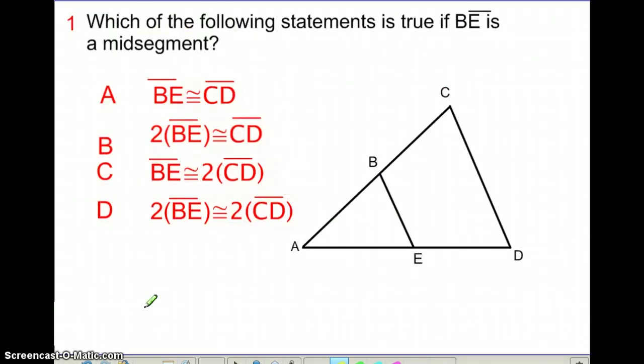Using the midsegment theorem, think about this question. Based on the drawing here, BE is a midsegment of triangle ACD. Which of the following statements is going to be true in that case? The best recommendation is to go through each of these four and decide what the characteristics are. Nothing is being said about angles, so we can ignore the part about BE being parallel to CD. However, we know BE will be half as long as segment CD. Which of these four statements best categorizes that?